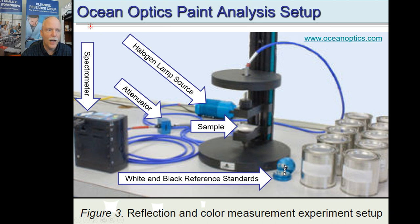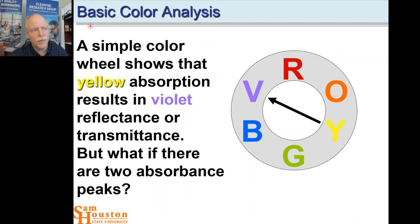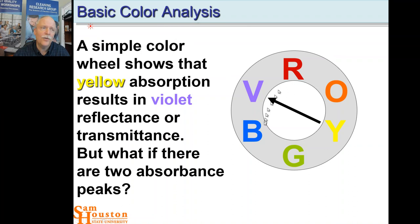We probably learned about color analysis using the color wheel — that if a spectrum shows absorption in the yellow, it presents as a violet substance, or if it absorbs blue, it's an orange substance. That works at a basic level, but what if there are two absorption peaks of different intensities? Basic color wheel analysis is not very useful quantitatively. It's more of an exercise in understanding complementary colors, but it isn't quantitative enough. This is why we need to use the CIE tristimulus values — those X, Y, and Z values — to quantify color.